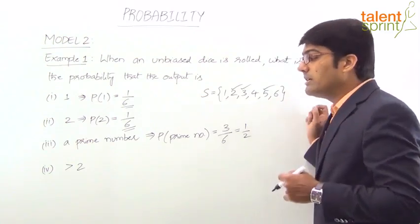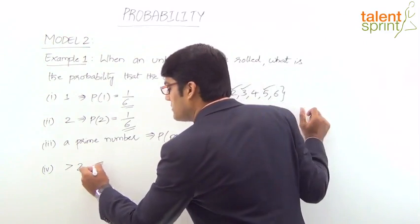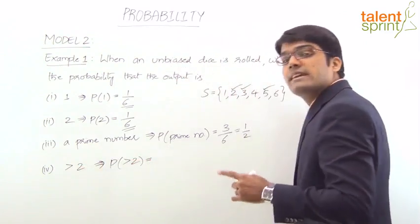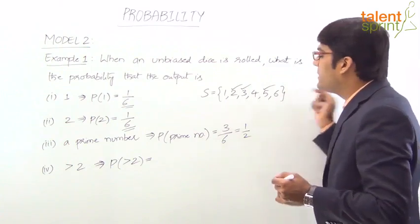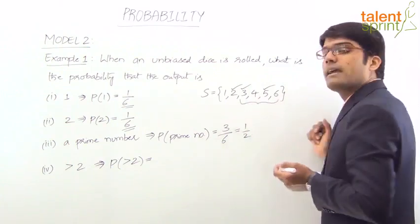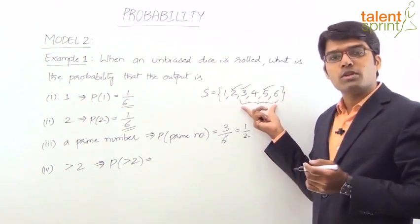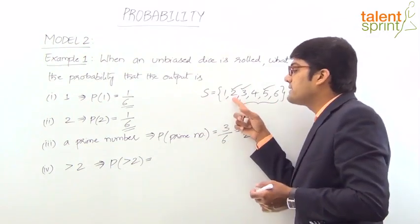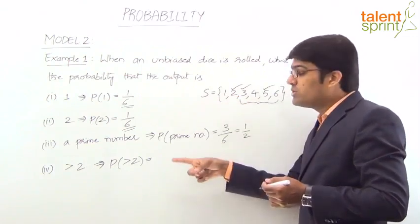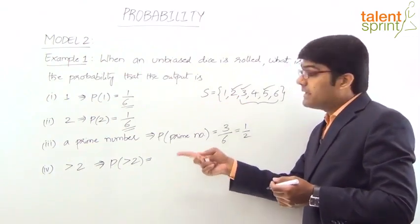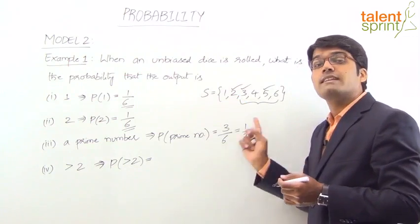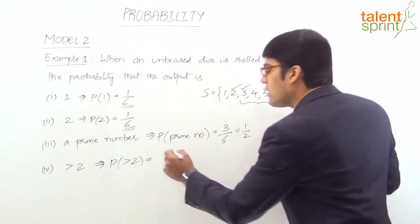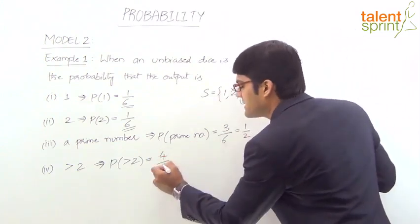What is the probability that the output is greater than 2? We need results greater than 2, which are 3, 4, 5, and 6. Note that 2 itself is not greater than 2, so we do not include it. That gives us 4 favorable outcomes out of 6, so the answer is 4/6, which simplifies to 2/3.